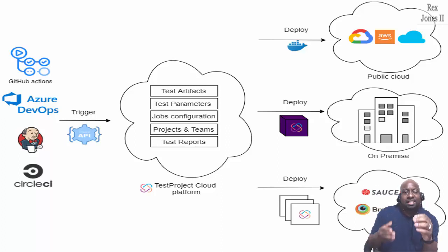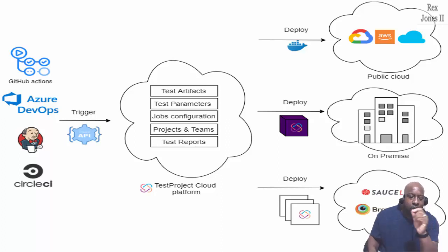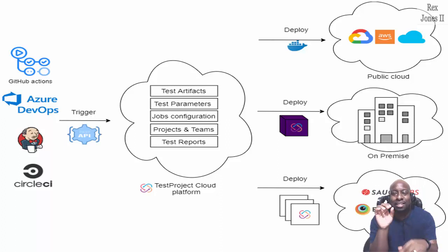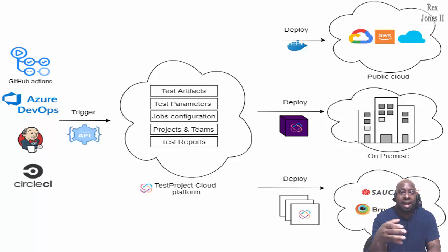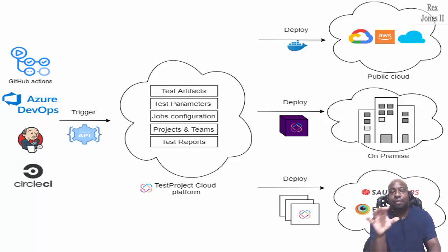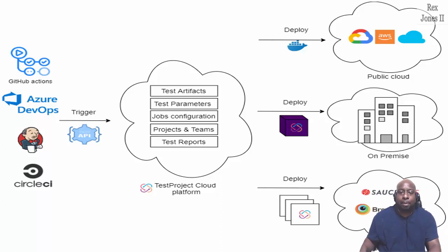In the cloud platform we see test artifacts, test parameters, job configuration, projects and teams, plus test reports. One of the benefits is that test automation can be triggered anywhere, including the command line. For deployment of our tests, it can be downloaded using Docker to the public cloud, downloaded on-premise, or deployed to a device farm — also known as a cloud web and mobile testing platform. The two most popular platforms are Sauce Labs and BrowserStack. TestProject also reports the results and notifies the pipeline when it is complete.